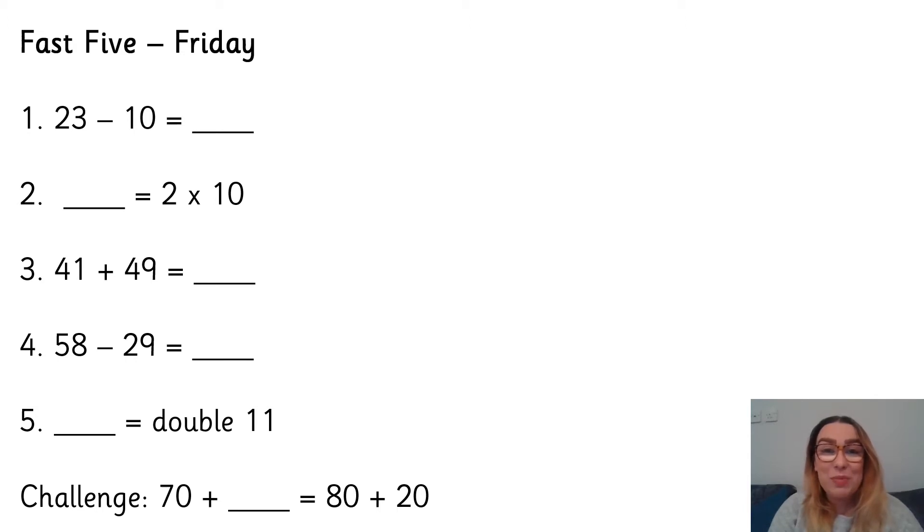Let's get on with our questions. So number one is 23 subtract 10 is equal to what? Number two, something is equal to 2 times 10. Number three, 41 add 49 is equal to what?